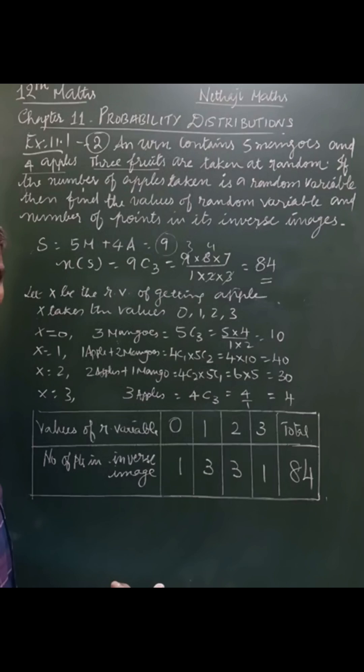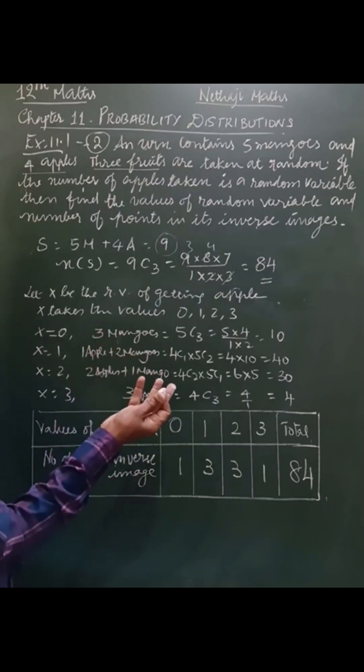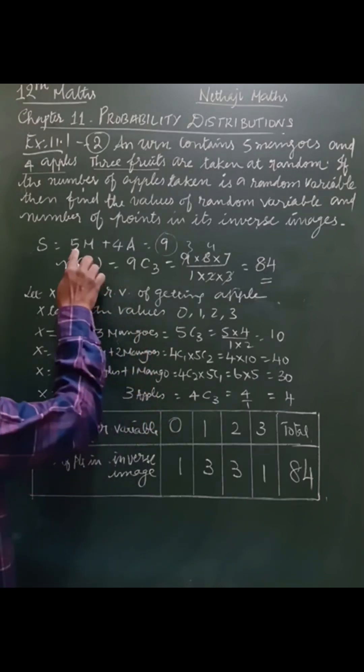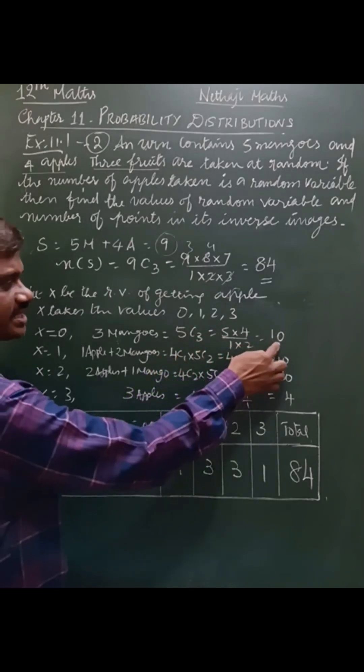So 0 apples, 1 apple, 2 apples, 3 apples. So first, for x equals 0: when x is 0, I will not have any apples. All I have is mangoes, so 3 mangoes. Out of 5, I have to select 3. So 5C3, which simplifies to 10.